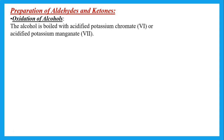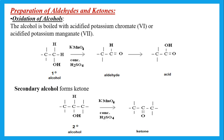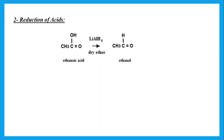If an alcohol is oxidized with an acidified oxidizing agent like potassium dichromate or potassium permanganate: a primary alcohol gives an aldehyde and then an acid, while a secondary alcohol gives a ketone. Alternatively, we can reduce acids using lithium aluminium hydride in dry ether to reduce the acid to an aldehyde.